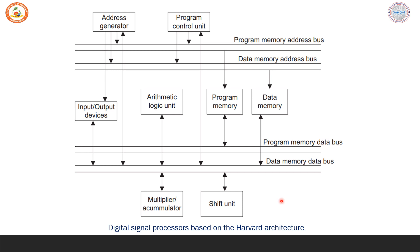Here is the architecture based on the Harvard architecture. We observe that there is a separate program memory and a separate data memory, with their respective buses — the program memory address bus and program memory data bus. Similarly, the data memory has its own address bus and data bus. As before, we have the ALU, input-output devices, address generators handling both program and data memory, and the program control unit responsible for sequencing the program. The additional units are the multiplier/accumulator or MAC unit along with the shift unit.